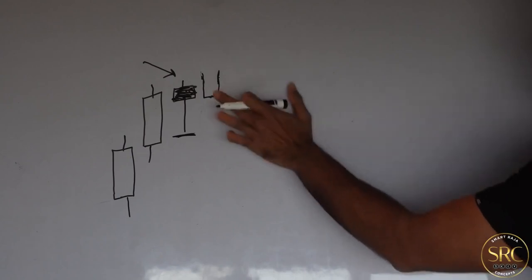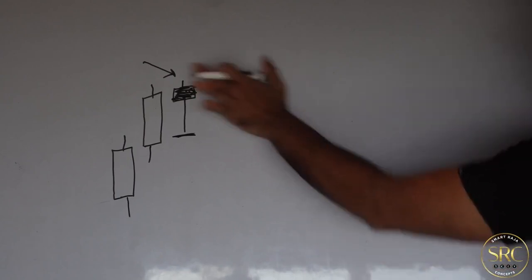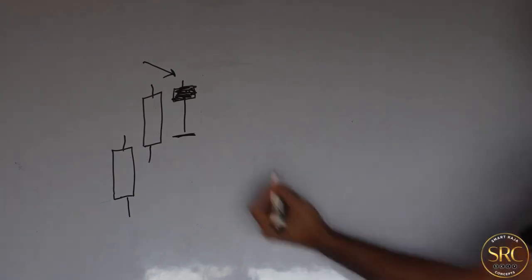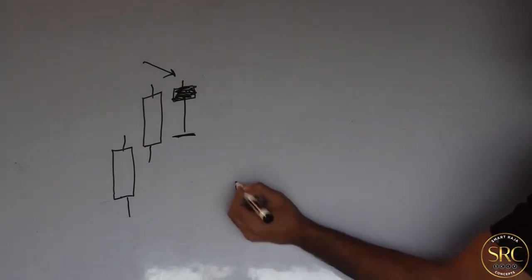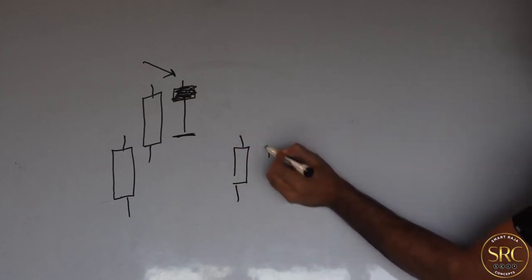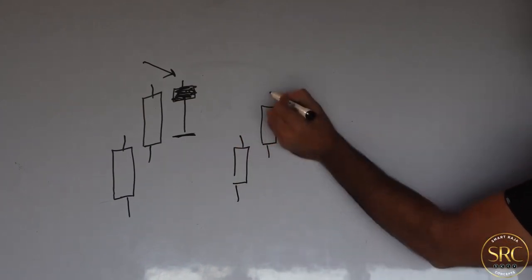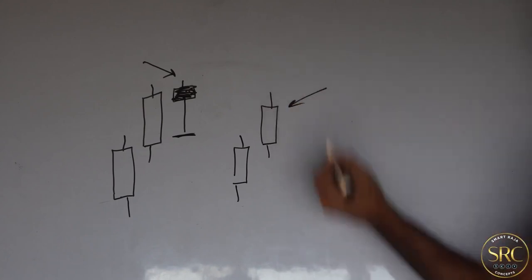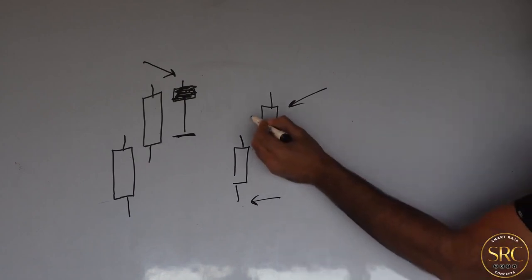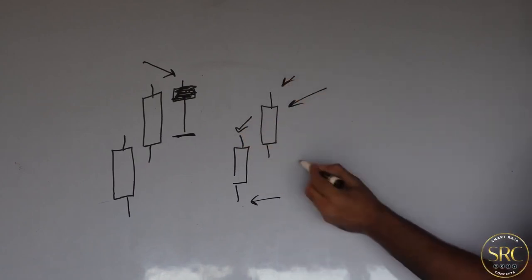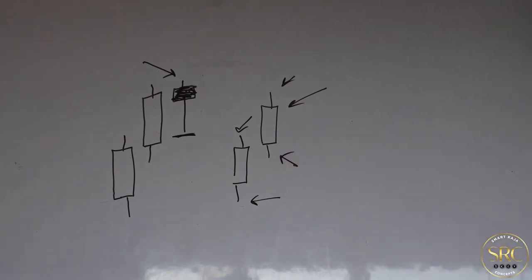Now let's talk about how you're anticipating the candles to form. The basics of trends: let's say trend is going bullish. A normal trend is that a candle is going to respect the low and break the high — it's going to make a higher high and a higher low. Very simple. That's the basics of a trend.